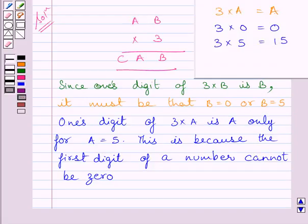We know that 3 multiplied by A is equal to A is possible for only two values of A, if they are 0 and 5. Now, since A cannot be equal to 0, so possible value of A is 5 and 1's digit of 3 multiplied by 5 is 5 itself.